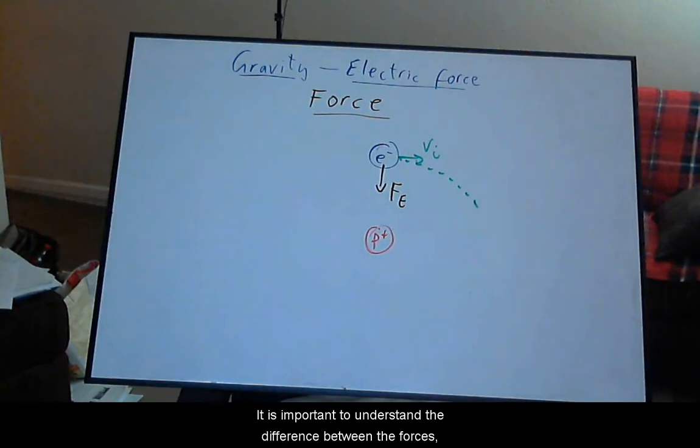It is important to understand the difference between the forces when it comes to applying Newton's second law. For small particles, such as an electron, the Coulomb force is much, much greater than gravitational force, and hence the weight can be neglected.